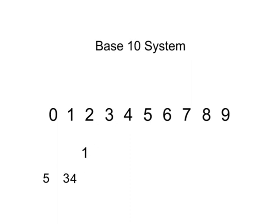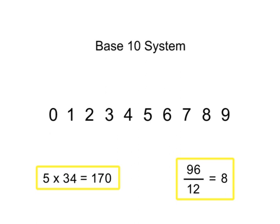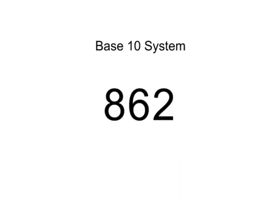We use this system to write numbers and perform mathematical operations. The position of a digit in the base 10 system determines its magnitude. This is referred to as place value. Moving from right to left, we multiply each preceding digit position by 10.